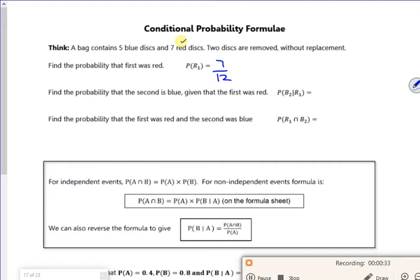Find the probability that the second one is blue, given that the first one was red. So if I take the red out, I've still got five blue discs, but I'm down to eleven discs in total. So that's just what you have on the tree diagram, isn't it? And that's what conditional probability is without replacement.